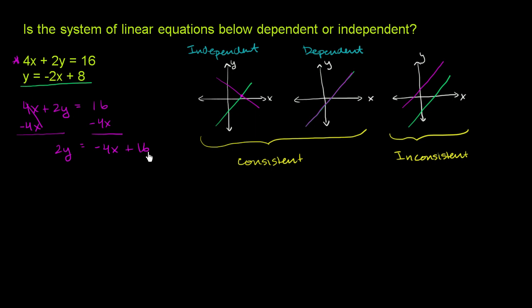I just wrote the negative 4 in front of the 16, just so that we have it in the traditional slope-intercept form. And now we can divide both sides of this equation by 2, so that we can isolate the y on the left-hand side. Divide both sides by 2. We are left with y is equal to negative 4 divided by 2 is negative 2x plus 16 over 2, plus 8.